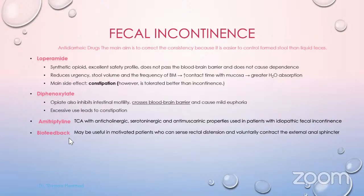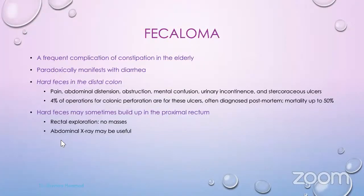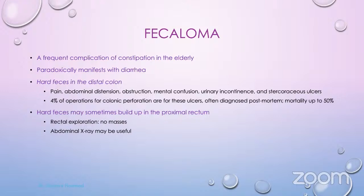Some studies report that biofeedback, whatever the cause of fecal incontinence, may be used in motivated patients who can sense their sphincter and contract it, with up to 40% success rate. Moving on to fecaloma — from its name, it is a fecal mass in the bowel. It is a frequent complication of constipation, especially in elderly who cannot evacuate freely. It can paradoxically manifest with diarrhea, as more liquid stool passes around the fecal mass.